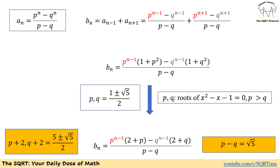We know P and Q are the roots of this quadratic equation: P equals (1 plus square root of 5) over 2 and Q equals (1 minus square root of 5) over 2, since P is greater than Q. Now, P plus 2 and Q plus 2 become (5 plus square root of 5) over 2 and (5 minus square root of 5) over 2 respectively. Also, P minus Q equals square root of 5.